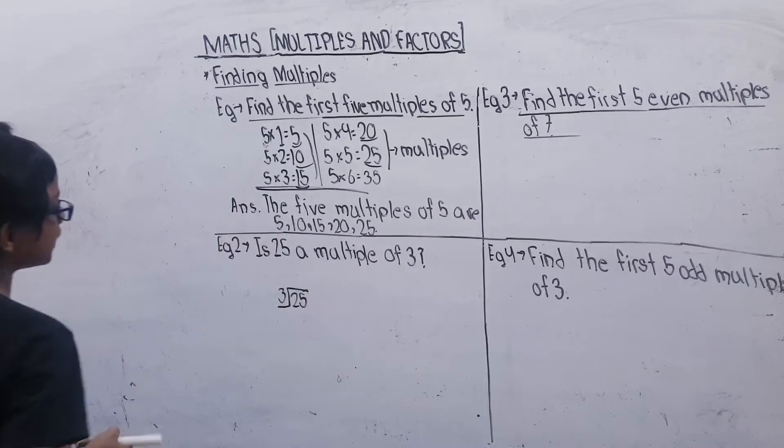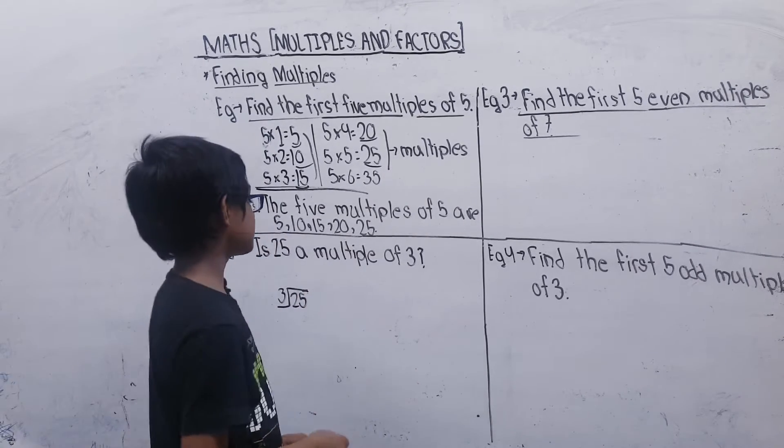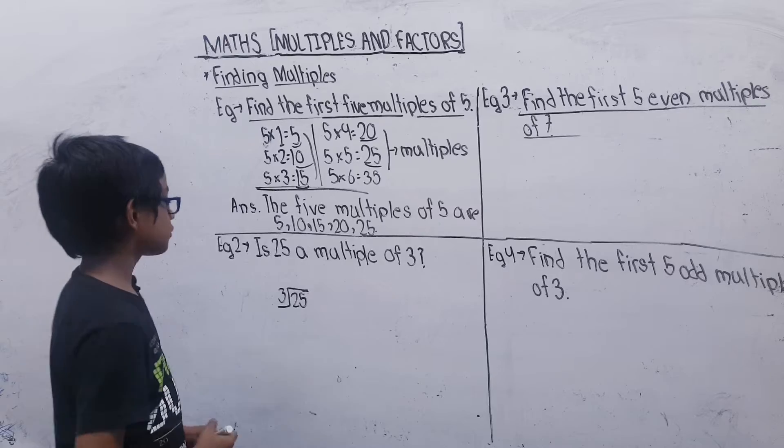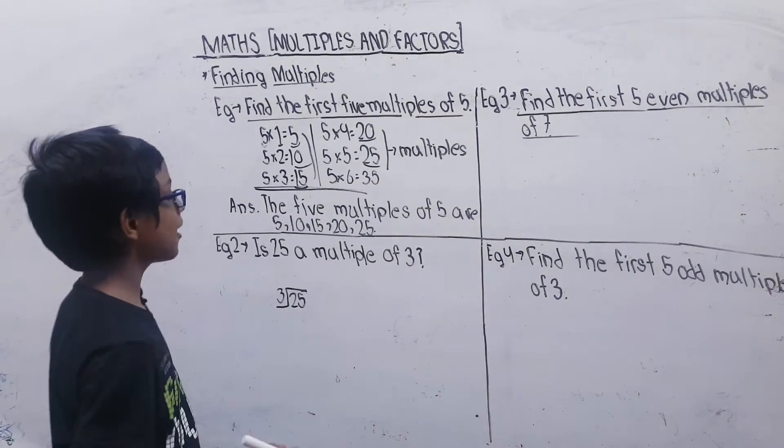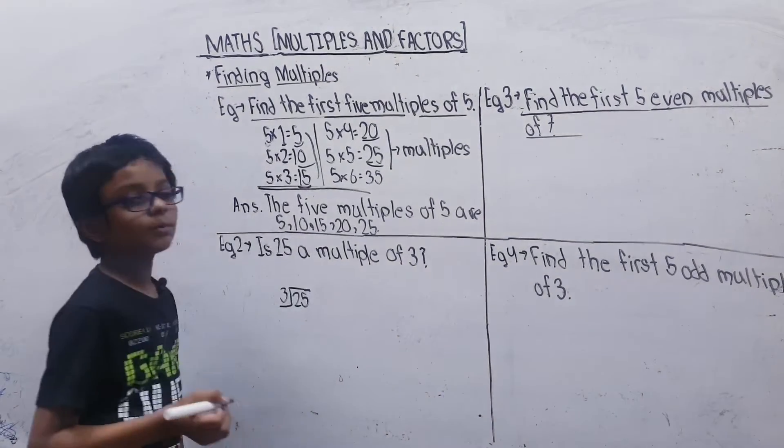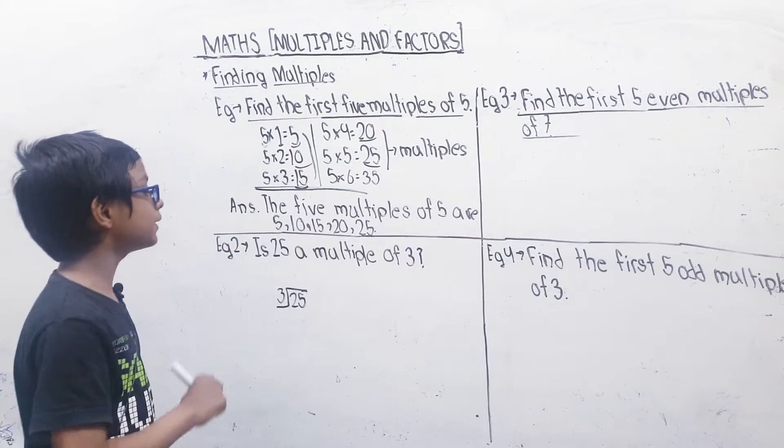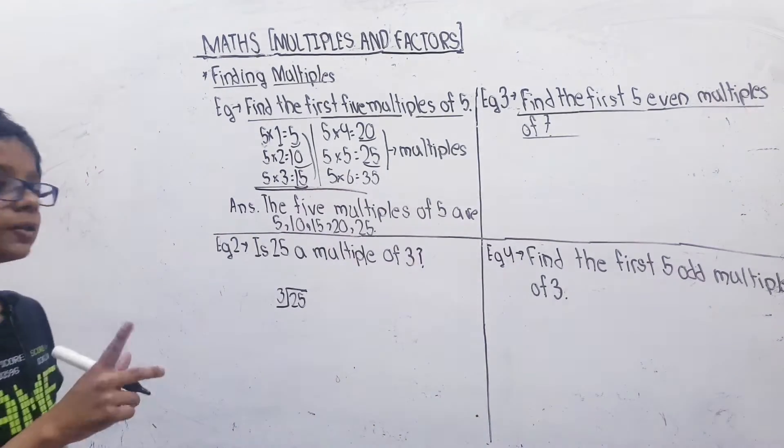So we will count the table of 3 till it comes to 25. 3×1 is 3, 3×2 is 6, 3×4 is 12, 3×5 is 15, 3×6 is 18, 3×7 is 21, 3×8 is 24. It can't go more than 24 because it will be 27 then we will not be able to subtract it.